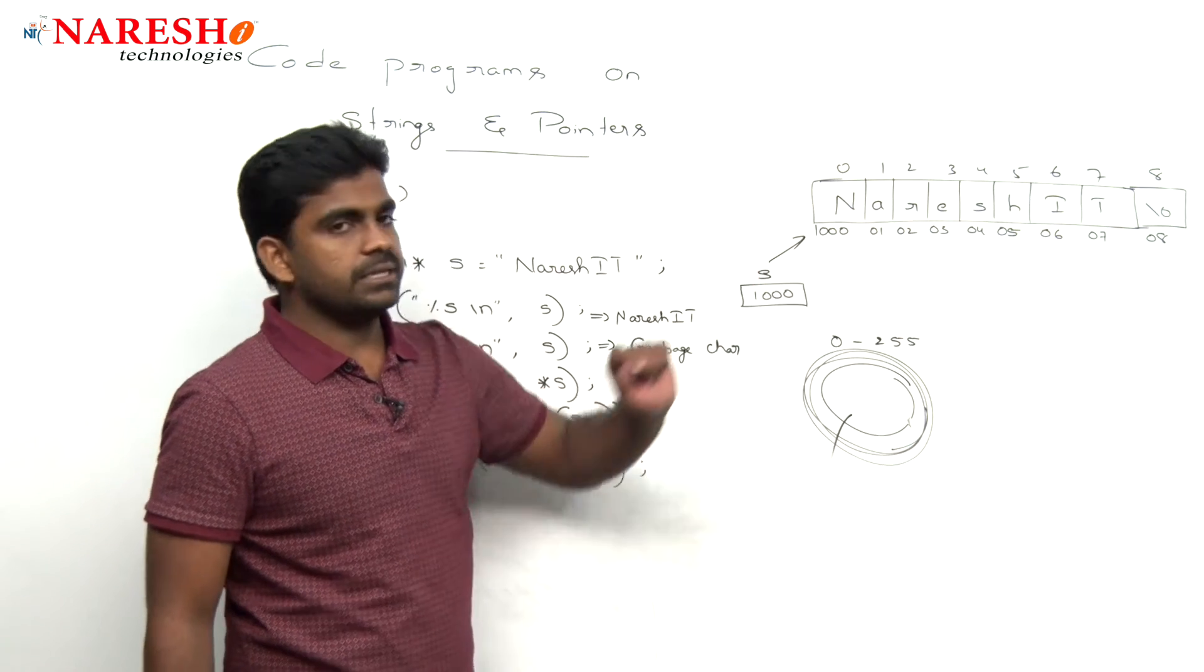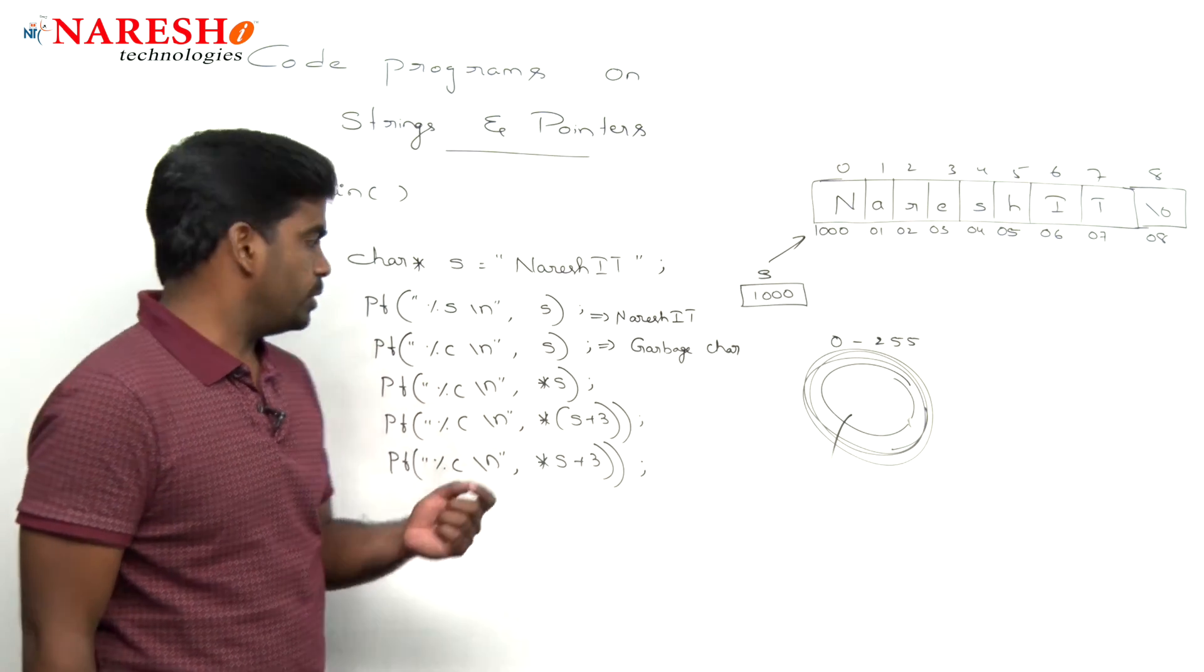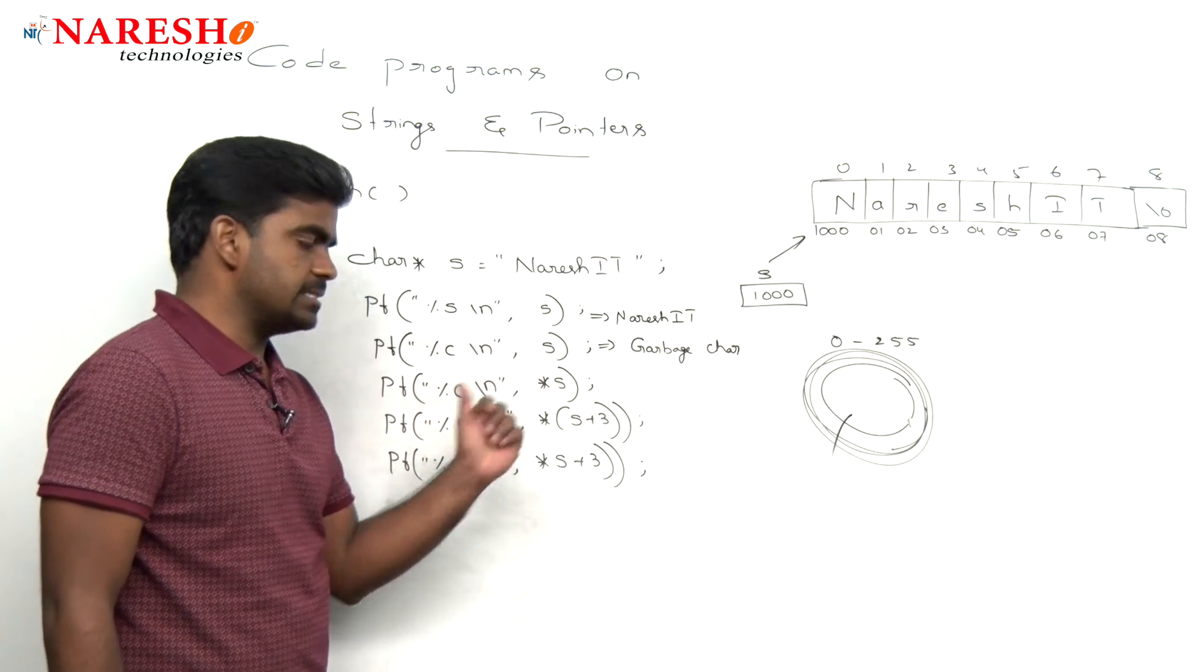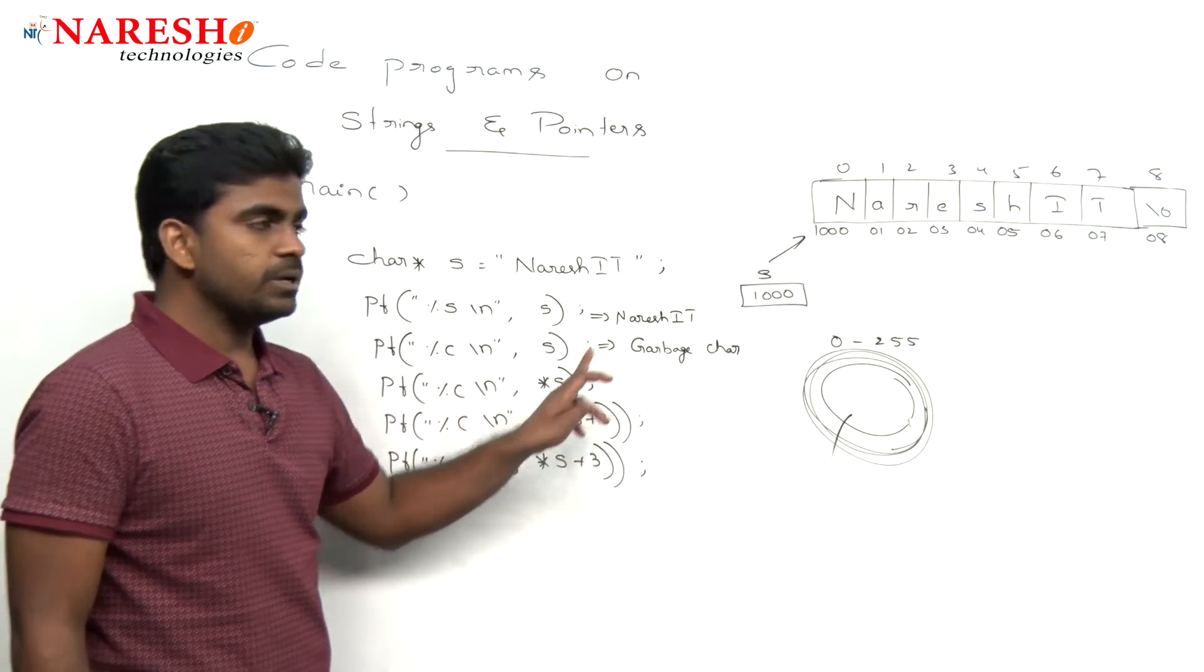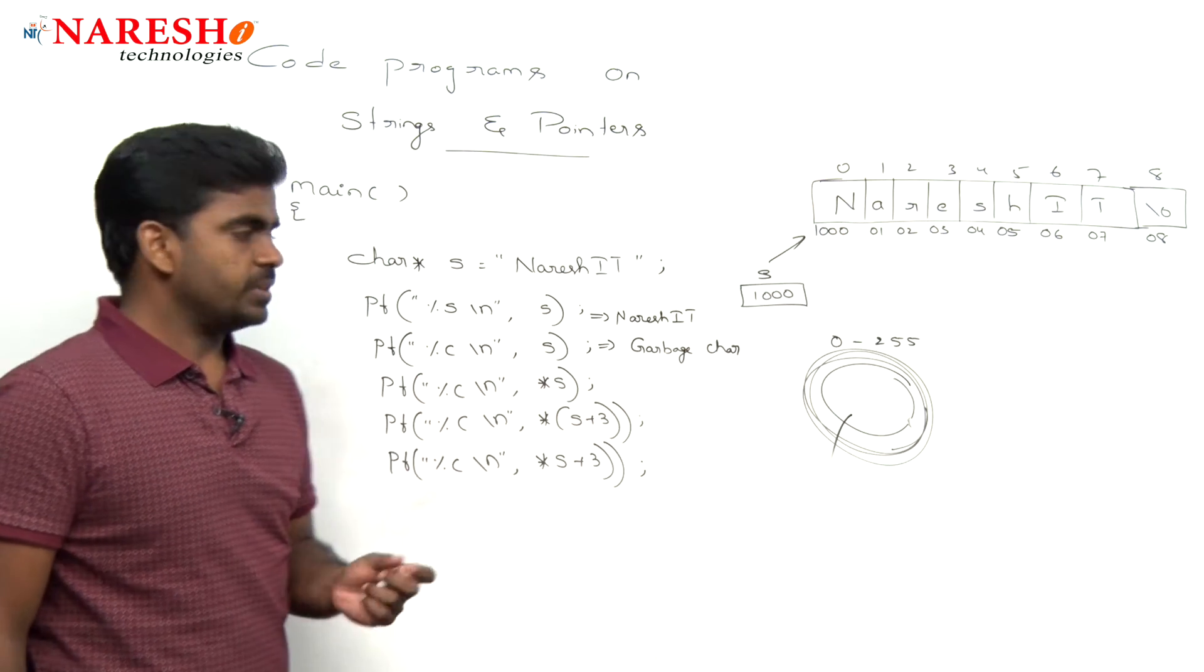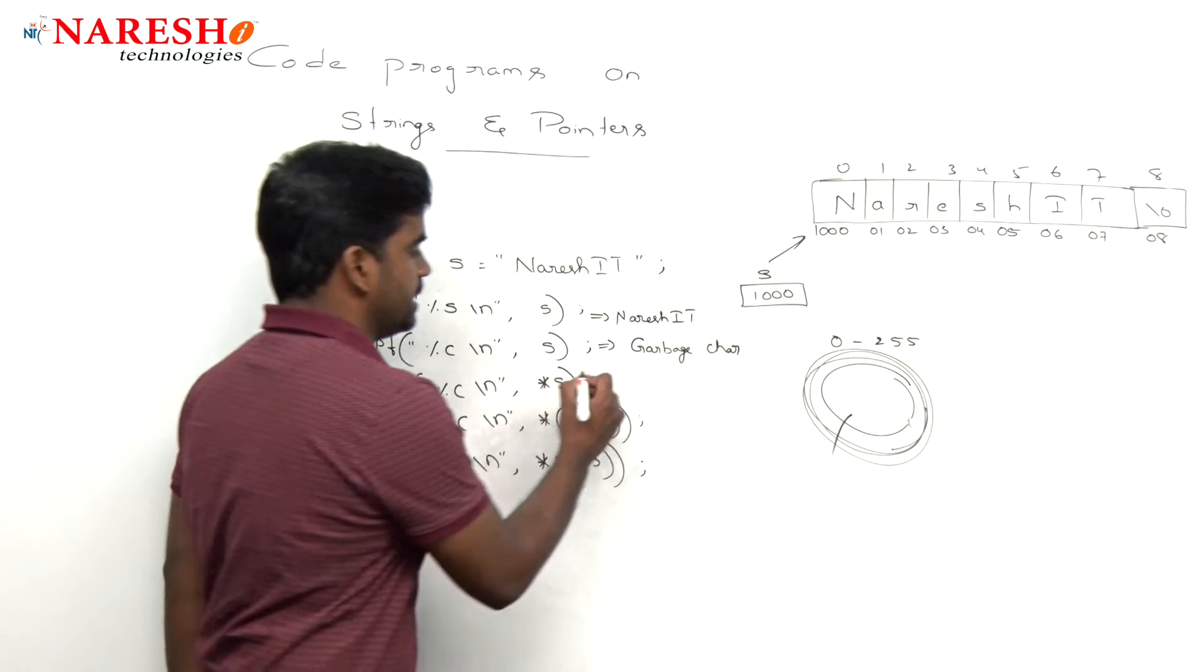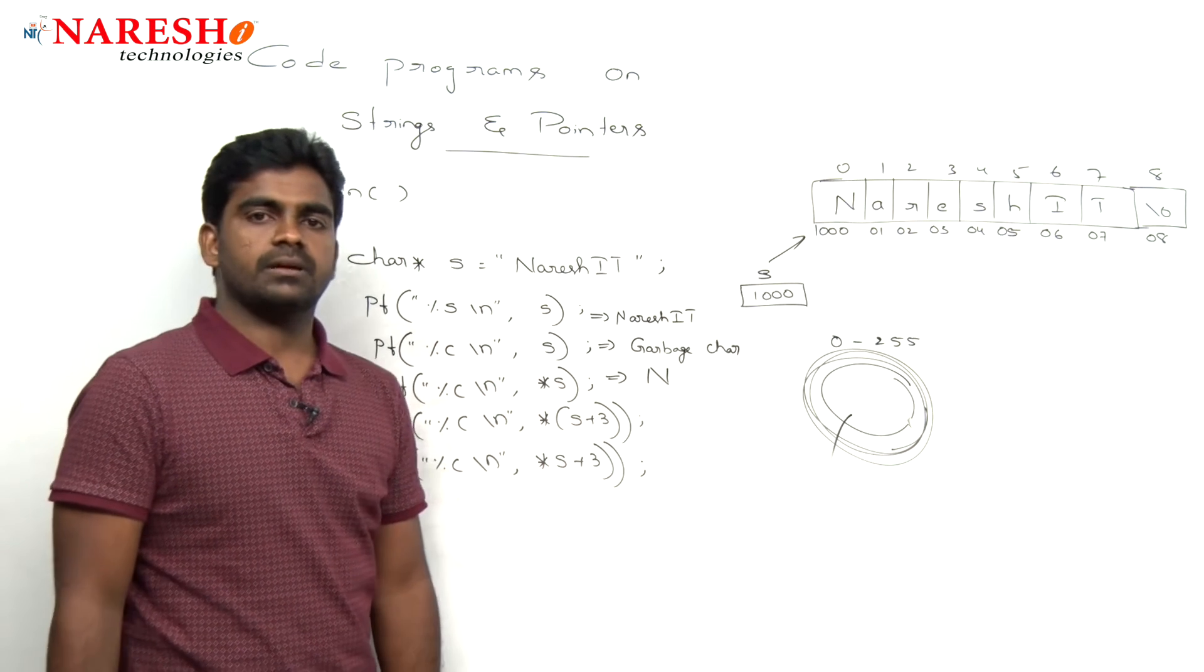Then how can we provide the location actually? Here, pointer S. S means what? 1000. Pointer to 1000 means what? The value which is inside that location is capital N. So that character is capital N.